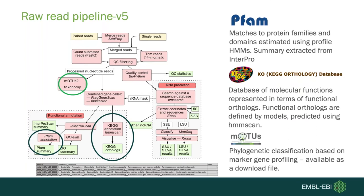The last addition to the raw read pipeline is motus, which assigns a taxonomy to the raw reads using universal single-copy marker genes to delineate prokaryotic organisms at species level. The motus database is made up of prokaryotic reference genomes and publicly available metagenomes, clustered by marker gene-based operational taxonomic units. These are provided as a downloadable file.